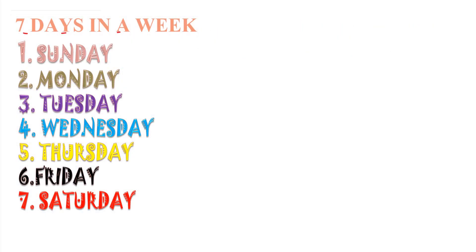There are seven days in a week. The first day is Sunday, second day is Monday, third day is Tuesday, fourth day is Wednesday, fifth day is Thursday, sixth day is Friday, and the seventh and last day is Saturday. So one week is equal to seven days.